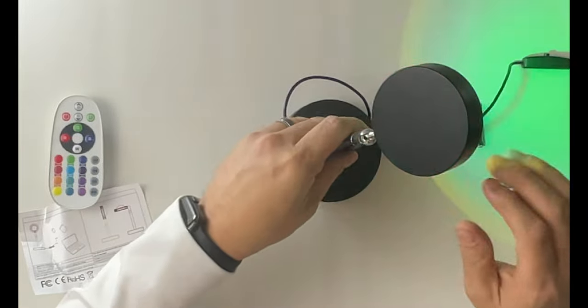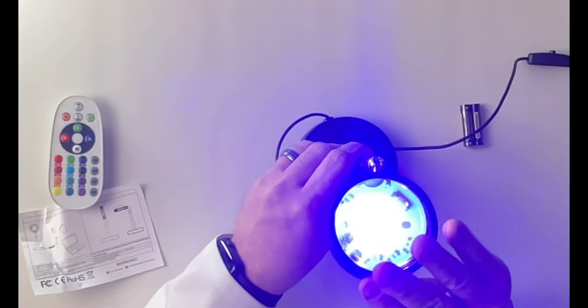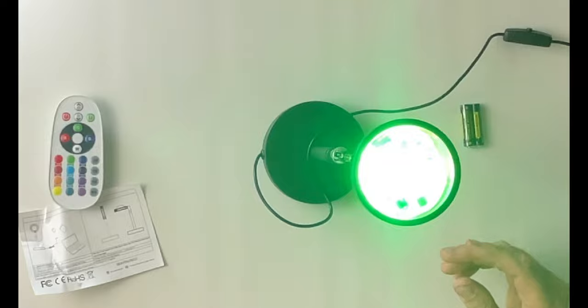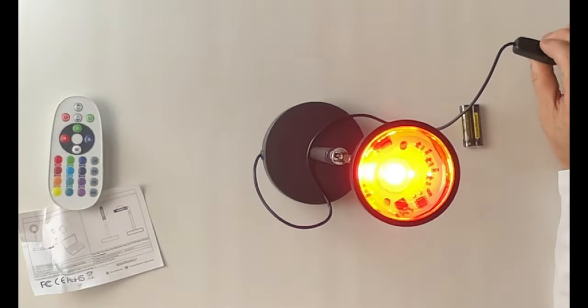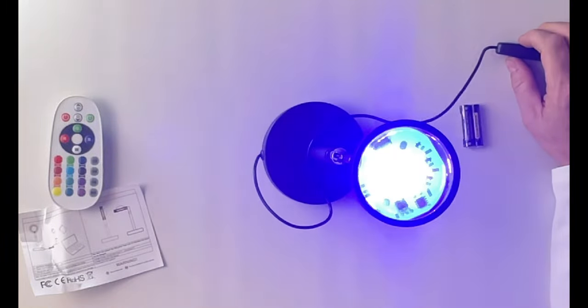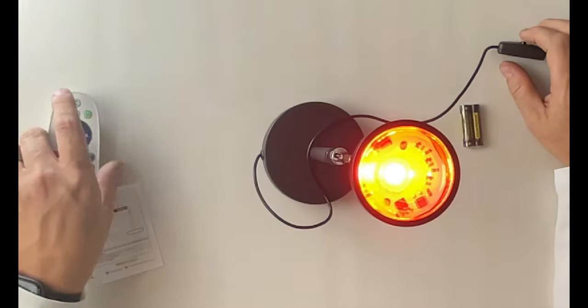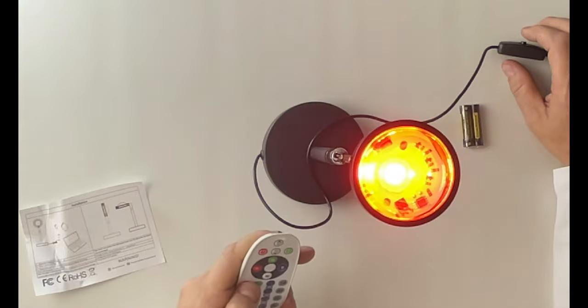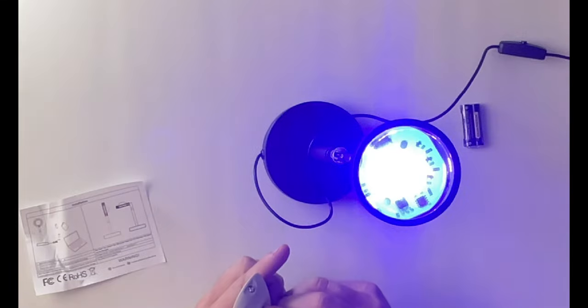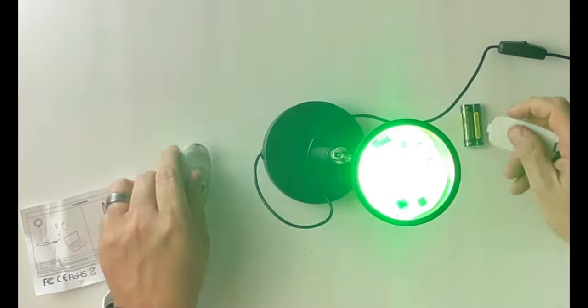And you can see it comes on right away. You can see right there it's starting to change colors. And if we tap the button, it turns off. Tap it, it comes back on, and it starts to switch through. And then our remote control we've got right here so we can change the colors on the remote. We need to install the batteries first. So let's do that.